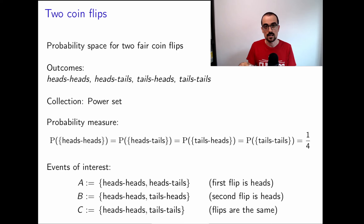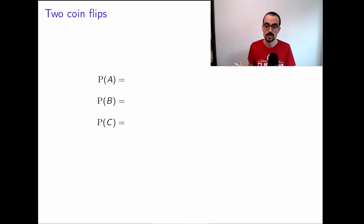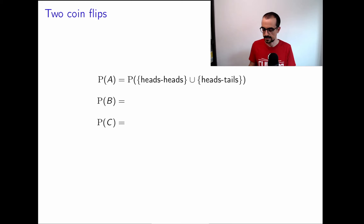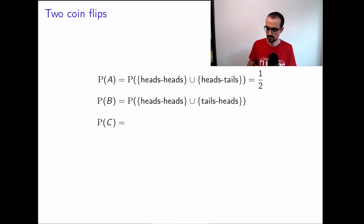Now let's consider whether these events are dependent or independent. We'll compute the probability of their intersections and check if they equal the product of their individual probabilities. P(A) = 1/2, P(B) = 1/2, and P(C) = 1/2, since each event contains two equally likely outcomes each with probability 1/4.